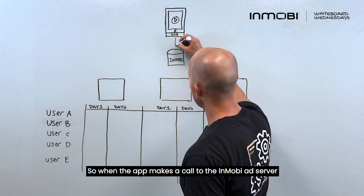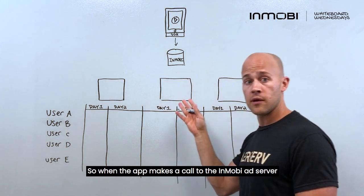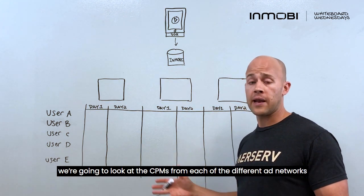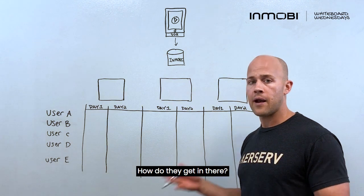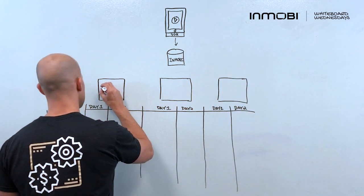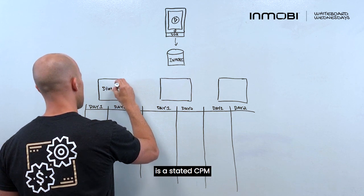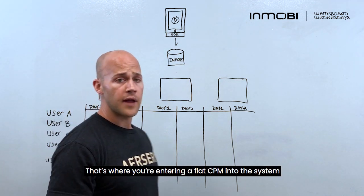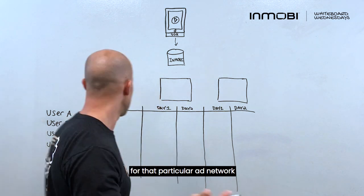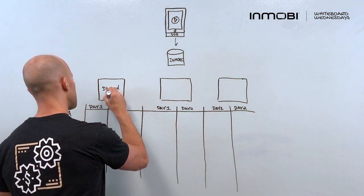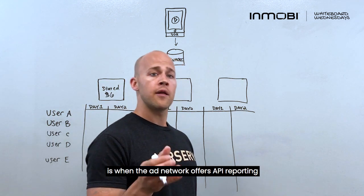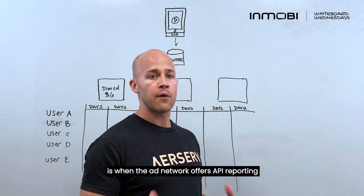When the app makes a call to the Mobi ad server, we're going to look at the CPMs from each of the different ad networks that you're working with. How do they get in there? Well, there are three different ways. The first way is a stated CPM — that's where you're entering a flat CPM into the system for that particular ad network. Let's say it's six dollars. The second way is when the ad network offers API reporting.